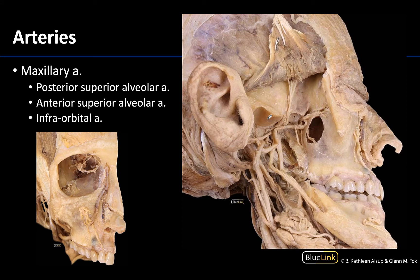Moving to a posterior-lateral view of the face — an extremely deep dissection — there are three arteries to identify. Starting with one of the largest branches of the third part of the maxillary artery: the infraorbital artery. You can see it entering the inferior orbital fissure. Looking straight into the orbit, it runs on the floor of the orbit in the infraorbital groove and then eventually through the infraorbital canal.